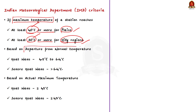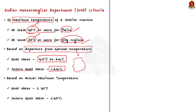The second criteria is based on departure from normal temperature. A heat wave is declared when departure from normal is 4.5 degrees Celsius to 6.4 degrees Celsius, and a severe heat wave is declared when departure from normal is more than 6.4 degrees Celsius. For example, if the average temperature of a region has been maintained at 32 degrees Celsius for a long period but now increases to 36.5 degrees Celsius, that is a 4.5 degrees Celsius departure from normal and that is when a heat wave is declared. If departure from normal is more than 6.4 degrees Celsius, it is a severe heat wave.